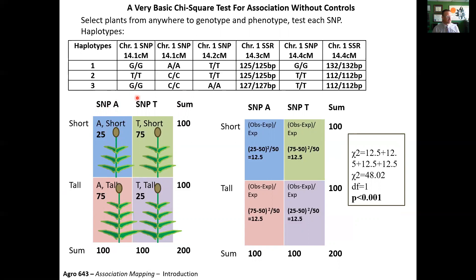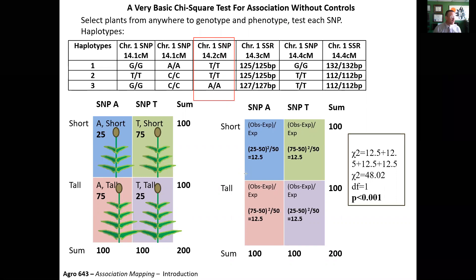So if we have all our short individuals at one marker — an AT SNP — we're contrasting tall plants: 75 of them have an A and 25 have a T. Then the short plants: 25 have an A and 75 have a T. A simple chi-square test — observed minus expected over expected — gives us values of 12.5, 12.5, 12.5, and 12.5. Summing those up gives a chi-square of 48, with one degree of freedom. We would say this marker is significantly associated with our phenotype.